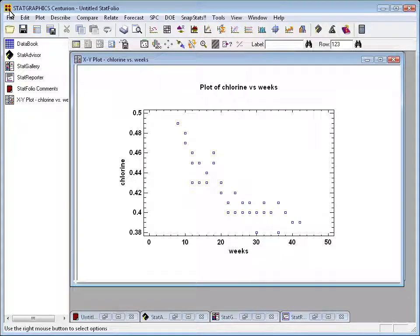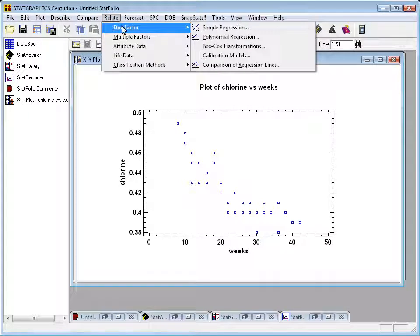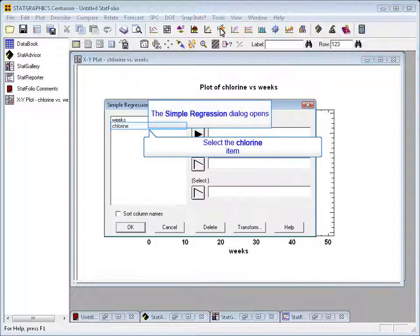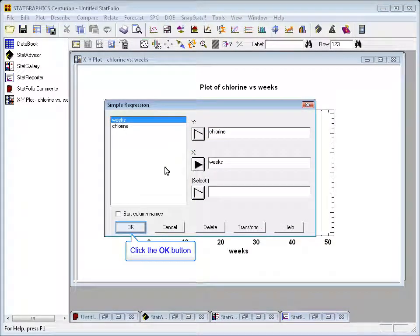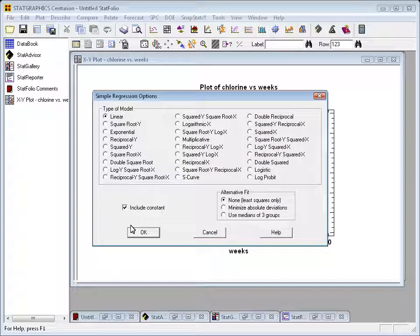In STATGRAPHICS, it's very easy to try lots of different models and pick the best. You do it by going to the Relate menu, selecting One Factor, Simple Regression. I'm going to tell the program that the column named chlorine has my Y values and the column named weeks has my X values. It will then offer to fit any of 27 different curvilinear models to the data. Now I'll start with the linear model, but we'll see we can also compare a lot of other models very easily. So let's just take the linear model and press OK.